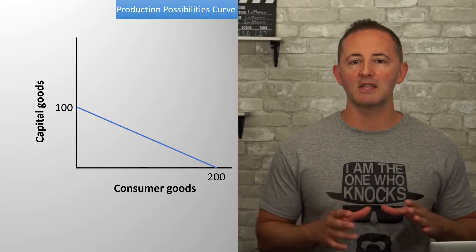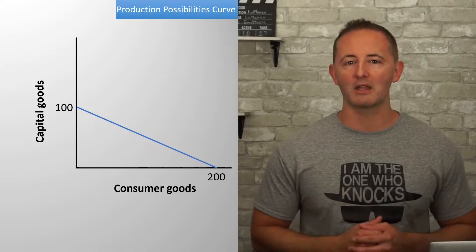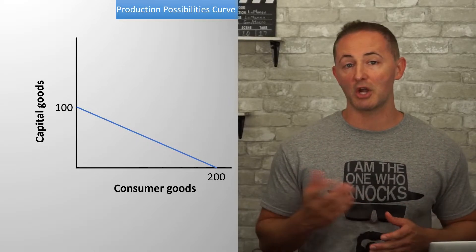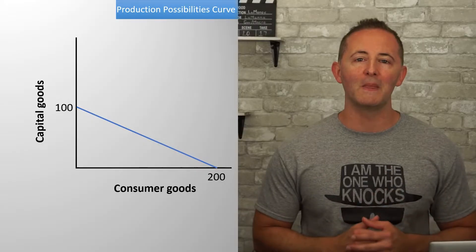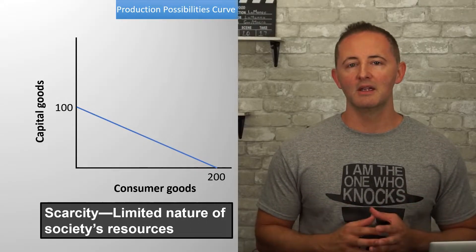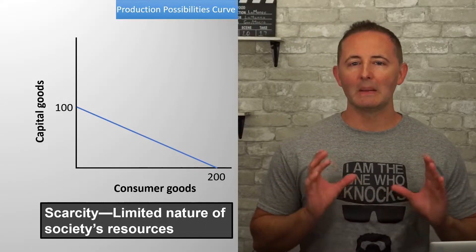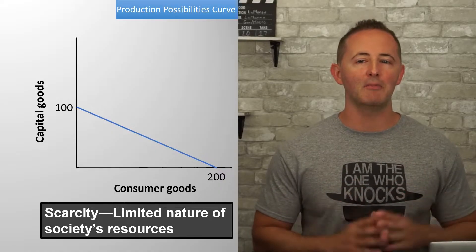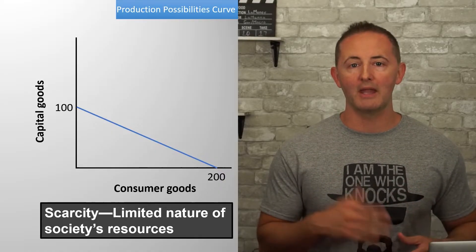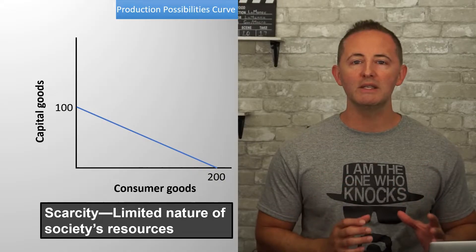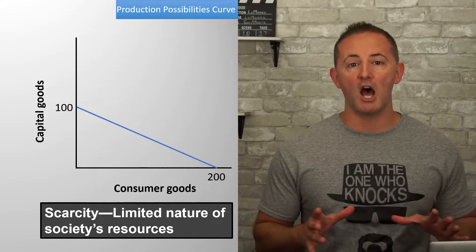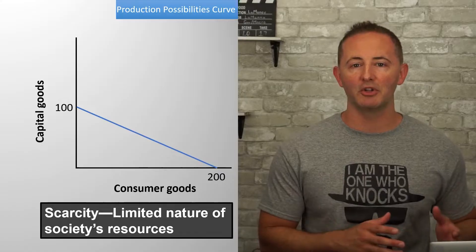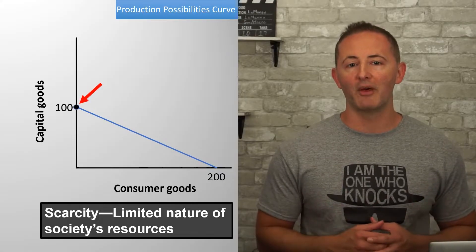Here's where some concepts from the first video come back into play — scarcity, opportunity costs, trade-offs. They're all here on this model. Let's start with scarcity. Because of the limited nature of resources, it isn't possible to produce an infinite amount of capital and consumer goods, so choices have to be made. If this economy decides to maximize its production of capital goods, it can produce 100 of them.